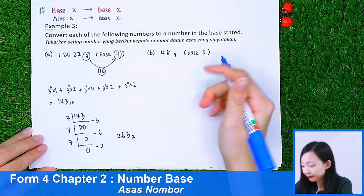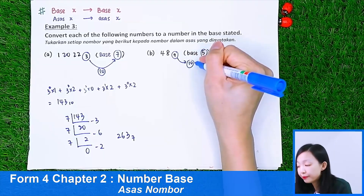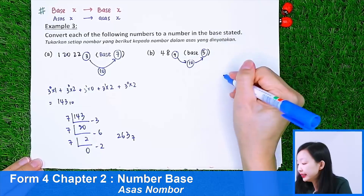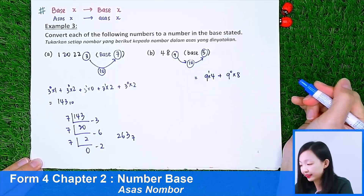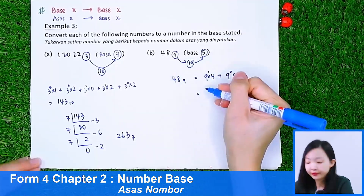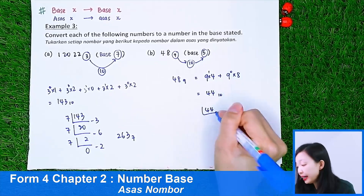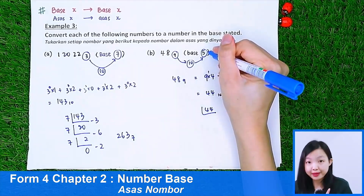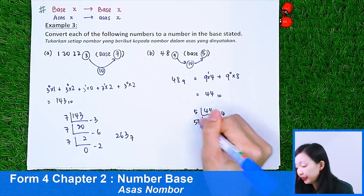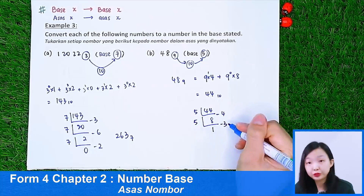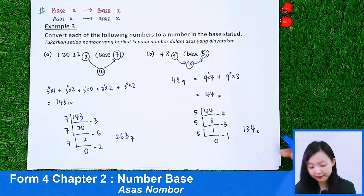Now part B: we want to change a base 9 number to base 5. Same process — go to base 10 first. So: 9⁰ × 8 + 9¹ × 4. The number 48 in base 9 gives us 44 in base 10. After getting 44 in base 10, divide by 5 — because we want base 5. 5 times 8 is 40, remainder 4. Continue divide by 5, remainder 3. Continue, remainder 1. So the answer is 1, 3, 4 in number base 5.